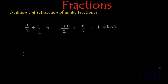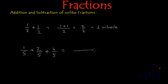Or when we were adding 1 by 5 plus 2 by 5 plus 4 by 5, we were doing the same thing. We were writing the denominator as it is and then we were adding the numerators. And 1 plus 2 plus 4 will be 7 and denominator will be 5.